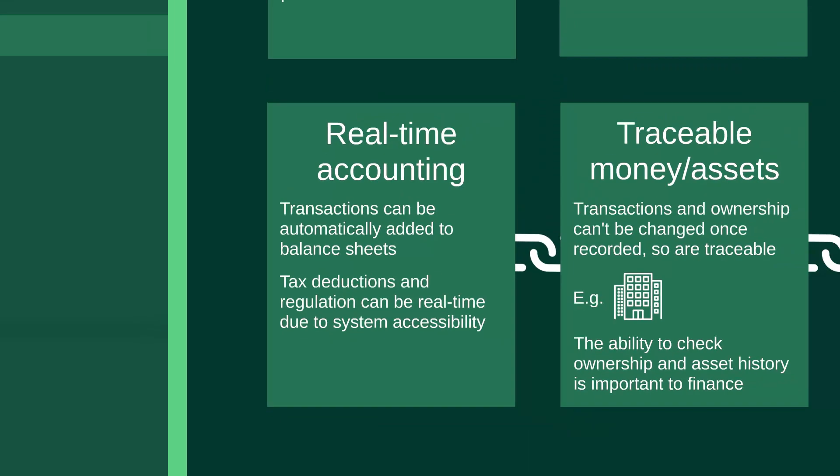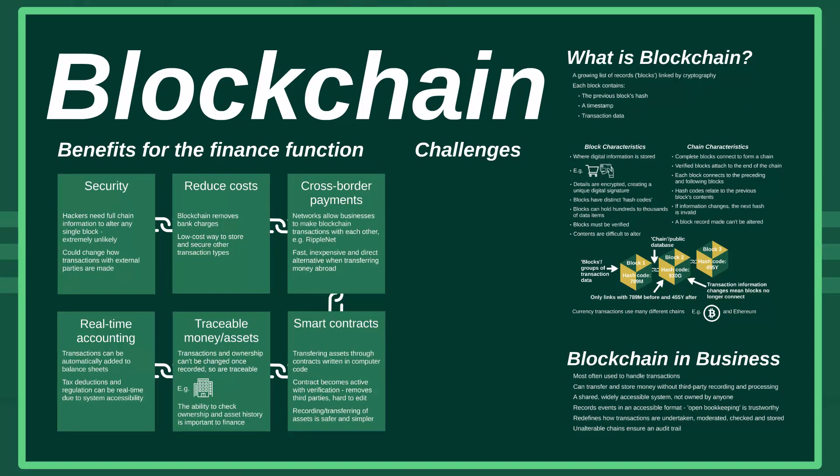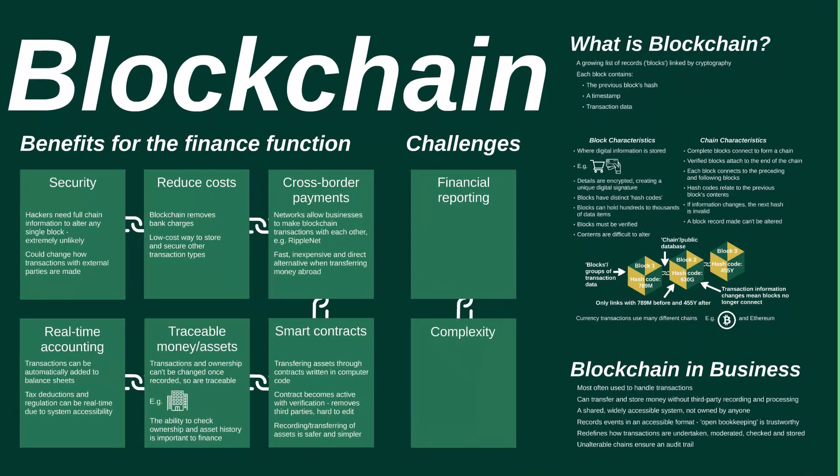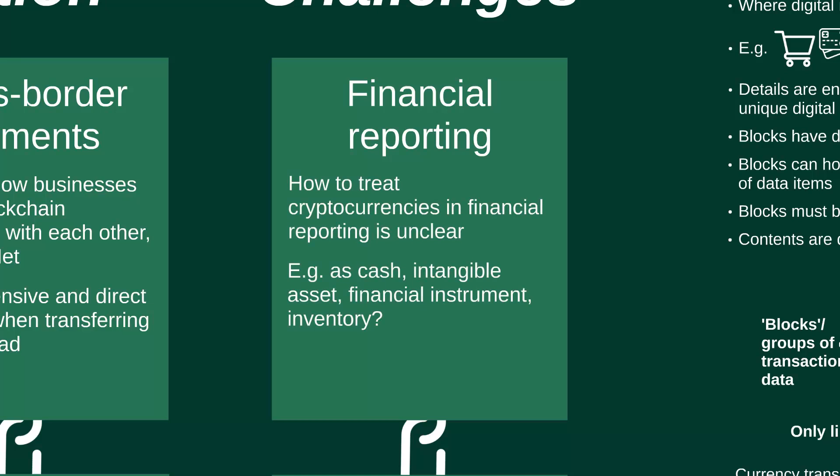There are also some challenges. The first is financial reporting. Cryptocurrencies such as Bitcoin use blockchain, and each currency has its own chain or ledger. However, cryptocurrencies didn't exist when accounting standards were designed, and it is unclear how they should be treated for financial reporting purposes. Should they be treated as a type of cash like sterling or euro, as an intangible asset like intellectual property, as a financial instrument like a share or bond, or as inventory like physical goods? So far there's been no consensus, and this poses a real challenge for the finance function.